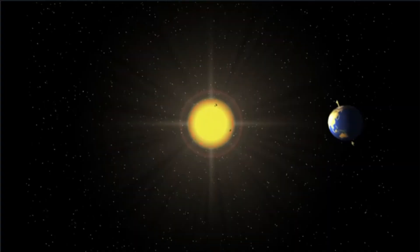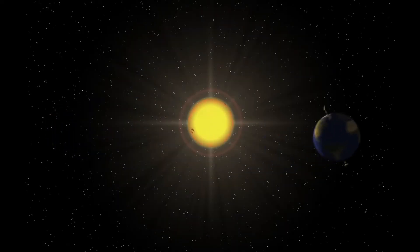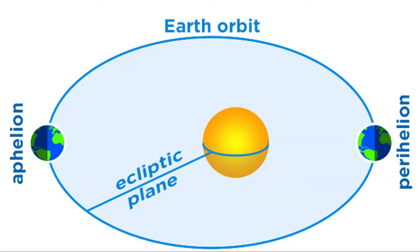The Earth goes round and round the Sun, following a path we call its orbit. This orbit is not a circular orbit but forms an ellipse — the mathematical name for an oval. The Sun isn't quite at the centre of the Earth's ellipse, which means the Earth has a maximum and minimum distance from the Sun. The point at which the Earth is closest to the Sun is called the perihelion.